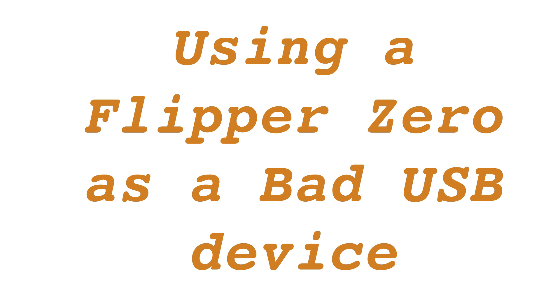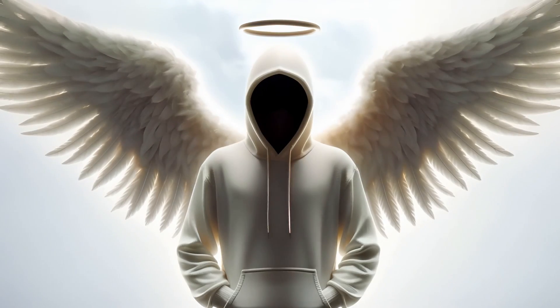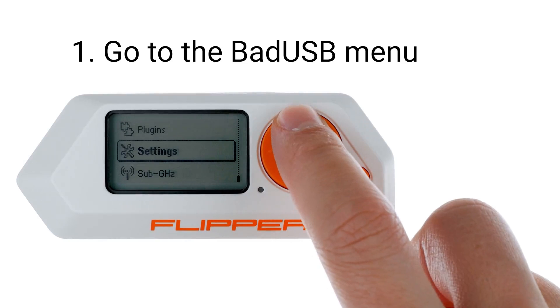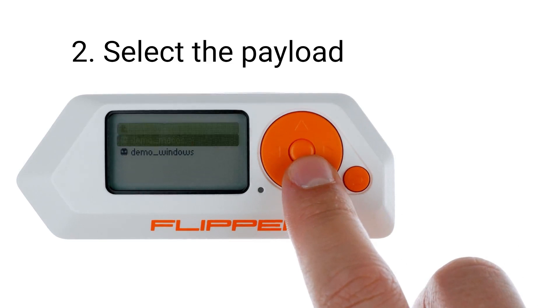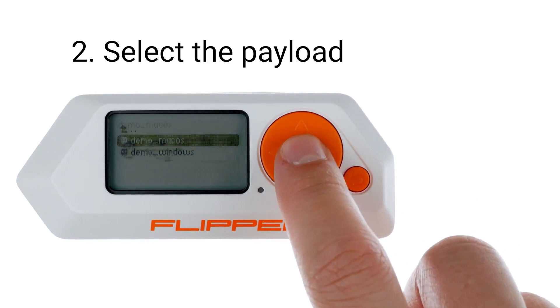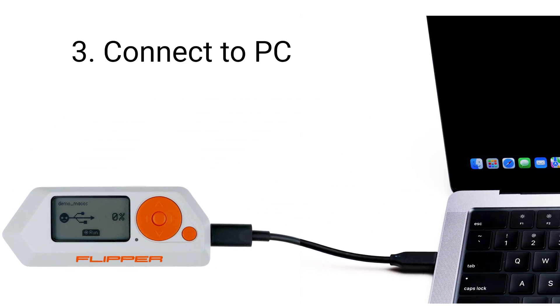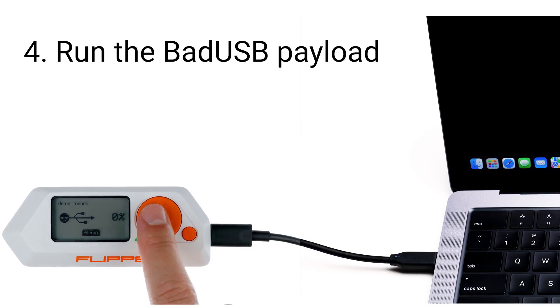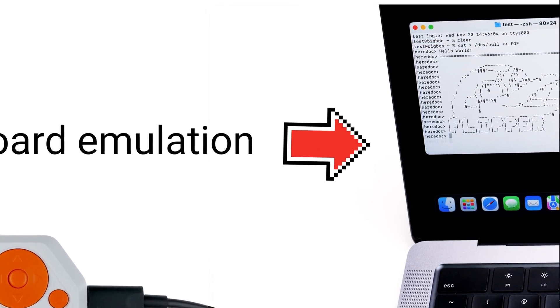To activate bad USB functionality with a Flipper Zero, the following steps must be adhered to: ensure the QFlipper application is closed; navigate to main menu, then bad USB on the Flipper Zero; choose the desired payload and confirm by pressing the OK button; connect the Flipper Zero using a USB cable; and initiate the payload execution by selecting RUN. By following these instructions, a Flipper Zero can effectively be deployed as a bad USB device.